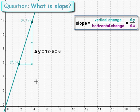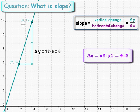So let's do delta x. We need the x coordinate of the second point. How much is that? 4, minus the x coordinate of the first point, which is 2. So delta x is going to be 4 minus 2 equals 2.